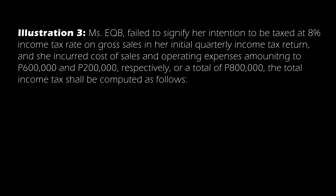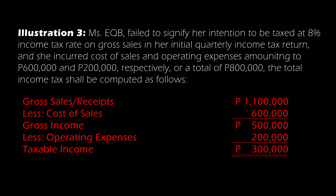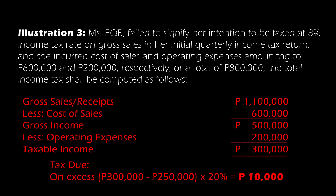Now suppose she failed to signify her intention to be taxed at 8% on gross sales in her initial quarter income tax return, and she incurred cost of sales and operating expenses of ₱600,000 and ₱200,000 respectively, for a total of ₱800,000. The income tax is then computed using the graduated income tax table: ₱300,000 minus ₱250,000, multiplied by 20%, giving a tax due of ₱10,000.